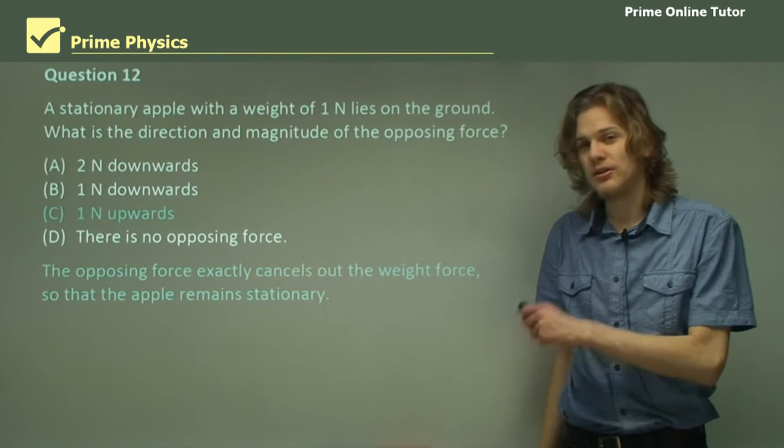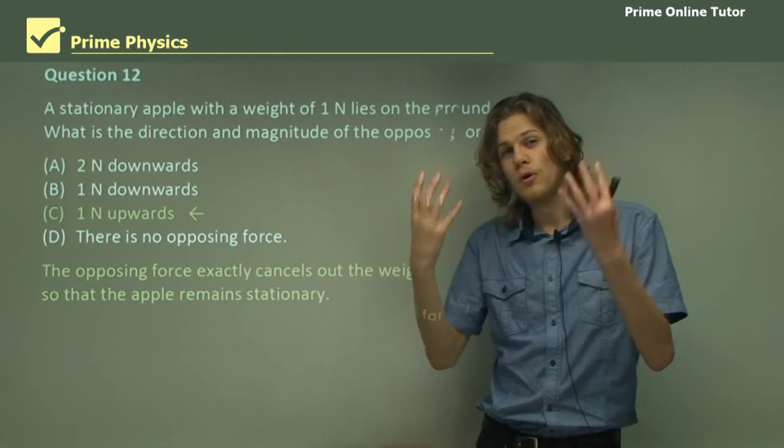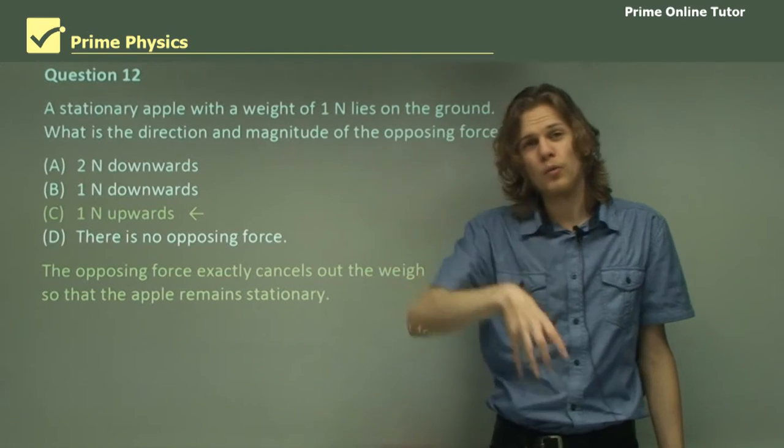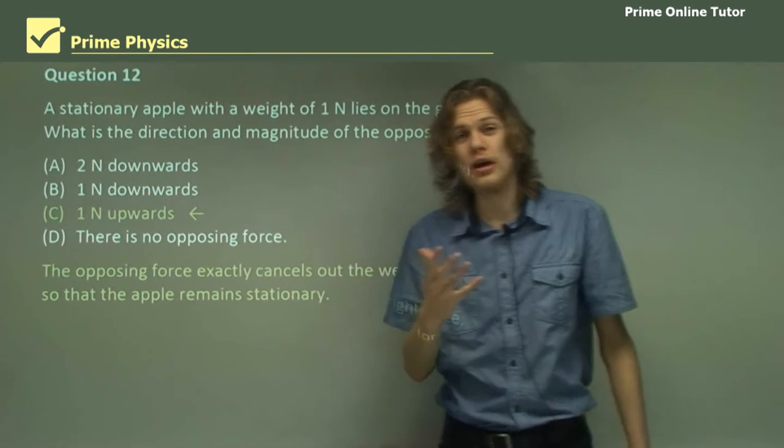Our only option left is C, one Newton upward, and this is the correct answer. If we add the one Newton upward of opposing force to the one Newton downward of gravitational force, we end up with a stationary apple with no net force.